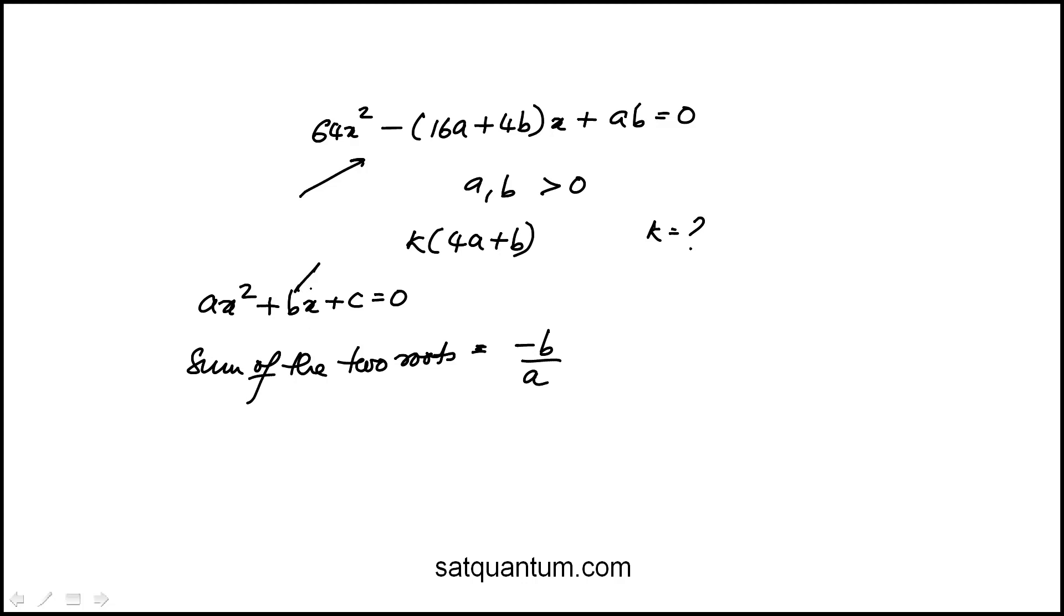And b is this coefficient of x term, not to confuse with the b here, and a is the coefficient of x squared term, c is the constant.